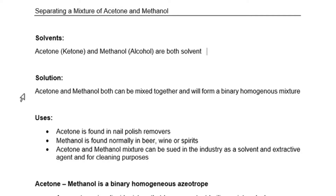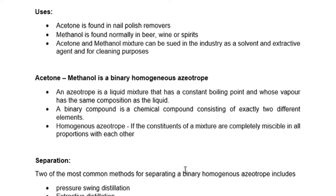It's important to note that acetone and methanol are both solvents, with acetone being categorized as a ketone and methanol classified as an alcohol. These two can be mixed together and they will form a homogeneous or binary mixture. Uses of acetone include nail polish remover, and methanol can be found in beer, wine, or spirits. The mixture of these two can be used industrially as a solvent, extracting agent, or for cleaning purposes. The mixture of acetone and methanol is a binary homogeneous azeotrope.